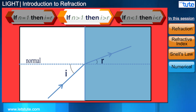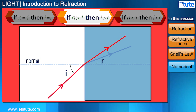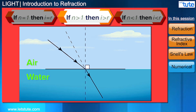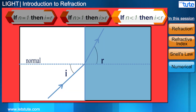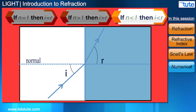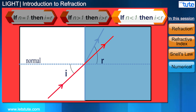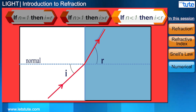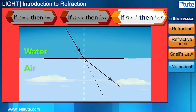This means in the ray diagram it looks like the light ray has bent towards the normal — for example, when light goes from air to water. If the refractive index is less than 1, then the angle of refraction becomes more than the angle of incidence. This means in the ray diagram it looks like the light ray has bent away from the normal — for example, when light goes from water to air.